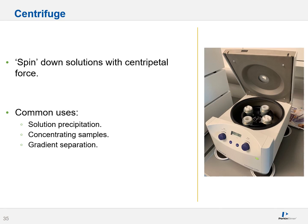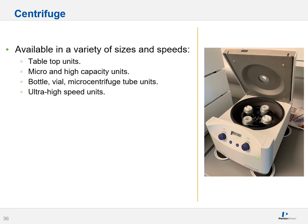You may also encounter a centrifuge in your lab. This is a device that spins down solutions with the aid of centripetal force — it literally spins samples round and round — and is used in solution precipitation, concentrating samples, or gradient separation, amongst other things. These devices are available in a variety of sizes and speeds: tabletop units, micro and high capacity units, units designed for bottles, vials, and micro centrifuge tubes — ranging from palm-sized to room-sized. There are also much faster ultra centrifuges available, which require a vacuum.